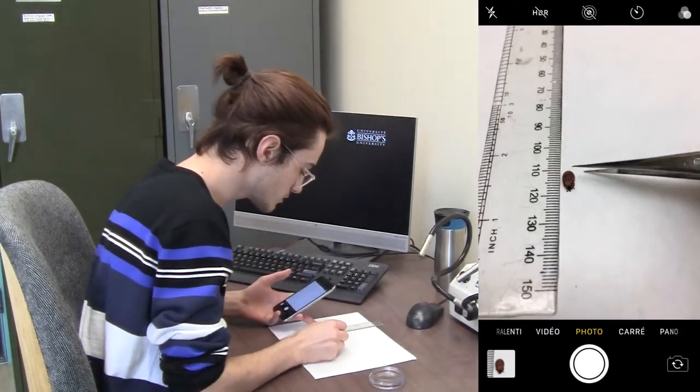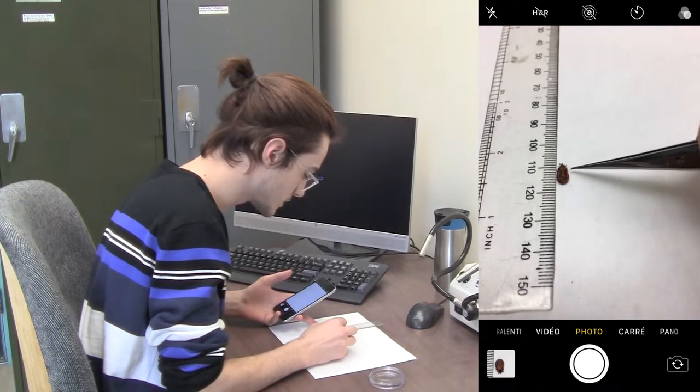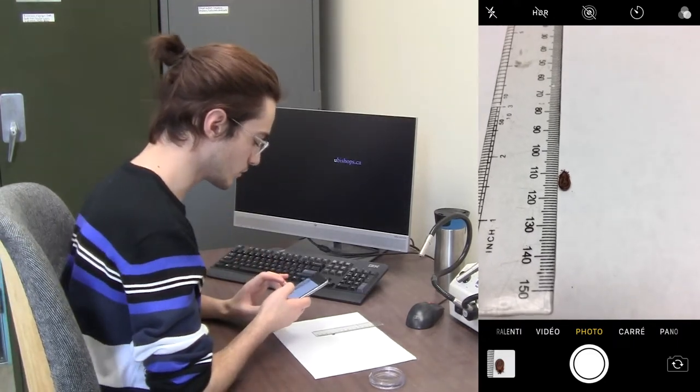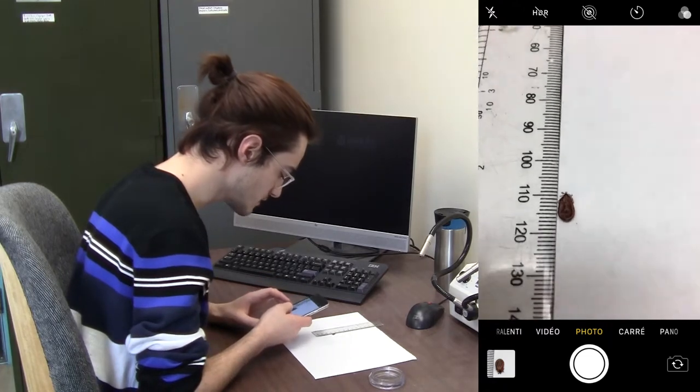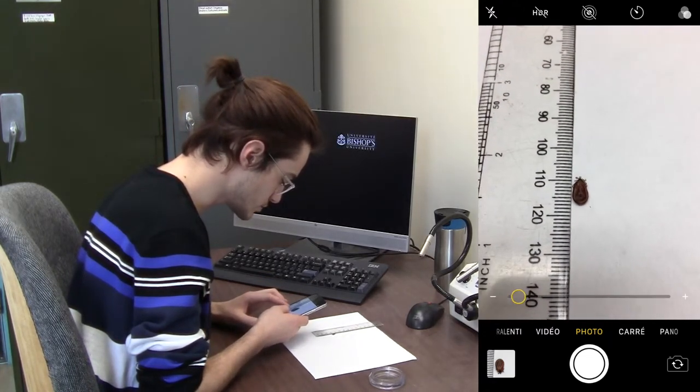Now I'm going to turn the specimen on its back and come take a picture of the ventral view. So I'm going to do the same thing. Approach my cell phone as much as I can and then zoom on the individual.